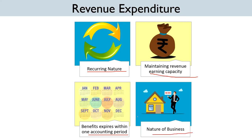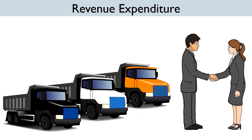We are going to understand this with an example because it is extremely important. Suppose a firm deals in trucks — the purchase of a truck or a fleet of trucks will be regarded as Revenue Expenditure and not Capital Expenditure. This is because the expenditure is made to maintain the revenue-earning capacity of the business and is done in the normal course of business. Similarly, if a company is in the business of buying and selling laptops, then buying a laptop will be Revenue Expenditure for it.